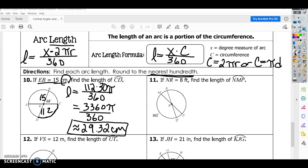For number 11, if NR is our radius here, is 8 feet, find the length of NMP. So here's NMP. We can see that this one is 162 degrees. The arc measure is the same as the central angle. So if that's 162, that means this one will have to be 18.